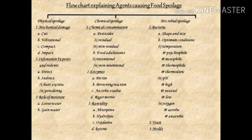The following flowchart explains the agents causing food spoilage, categorized into physical spoilage, chemical spoilage, and microbial spoilage. These are in turn categorized into mechanical damage, infestation by pests and rodents, role of moisture, chemical contamination, enzymes and rancidity, bacteria, yeast, and moulds.